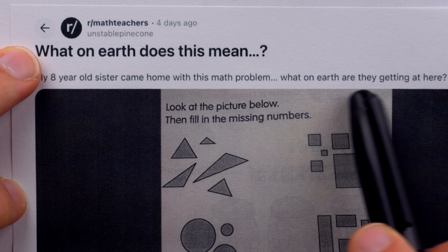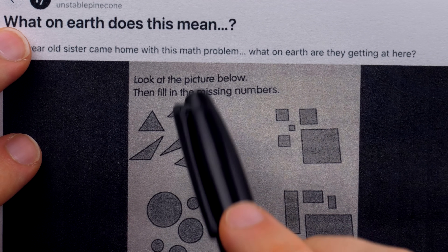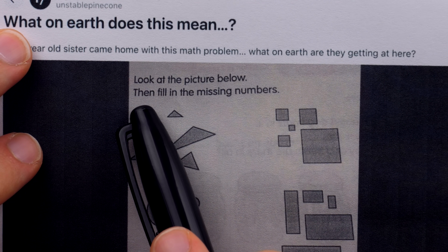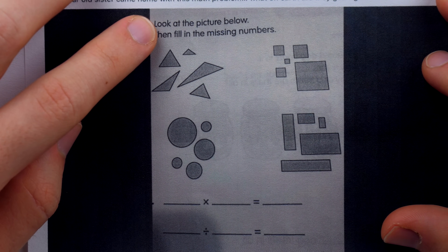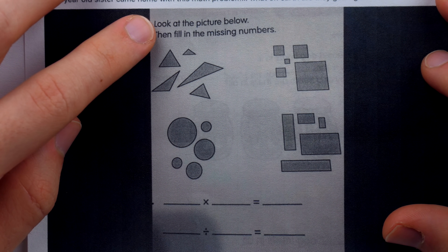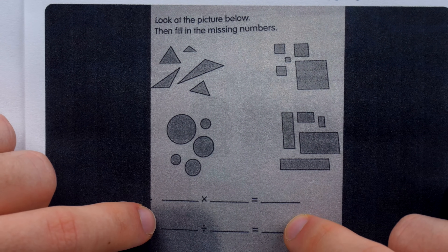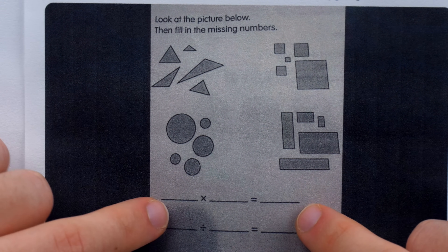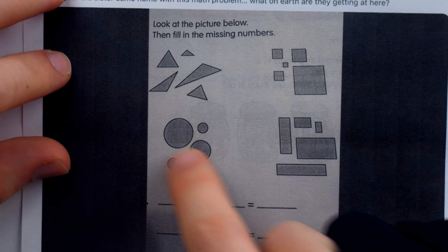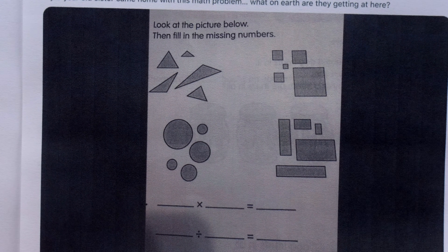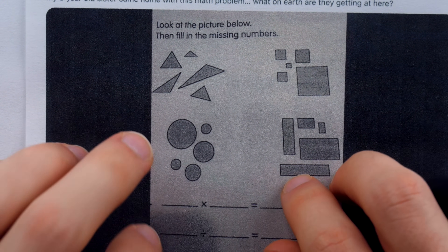His eight-year-old sister came home with this math problem, and he has no clue what on earth they're getting at. Here's the question: look at the picture below, then fill in the missing numbers. Here's the picture, and here are the blanks where we are supposed to fill in the missing numbers. The first issue is that the problem, as stated, establishes virtually no connection between the picture and the missing numbers. We're just told to look at this and then fill these in, but despite that, I do think the answer here is pretty clear.